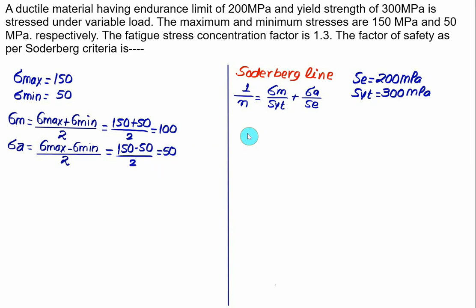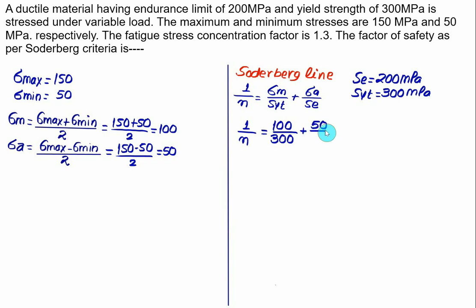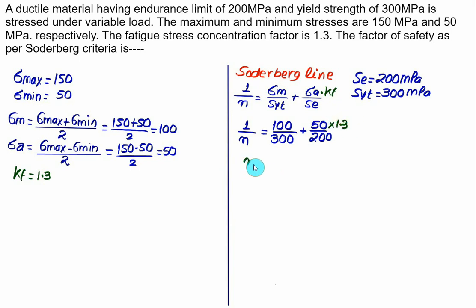Substituting into the equation, we have 1 divided by factor of safety equals mean stress 100 divided by SYT 300, plus amplitude stress 50 divided by endurance strength 200. We have not yet applied the stress concentration factor Kf equal to 1.3, so the amplitude term is multiplied by 1.3. Solving, the factor of safety N comes out to be very close to 1.51.